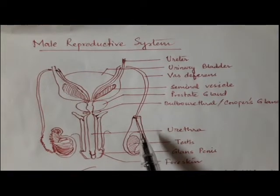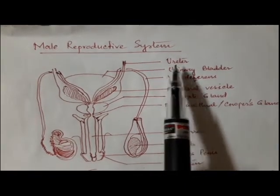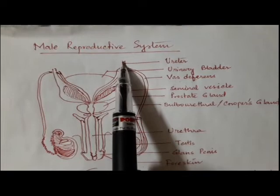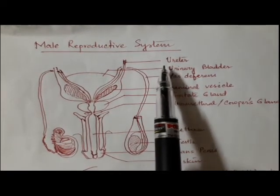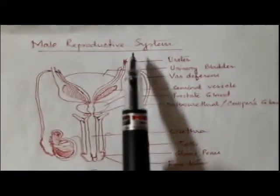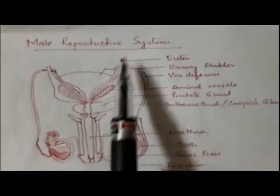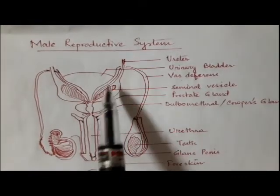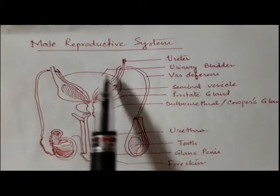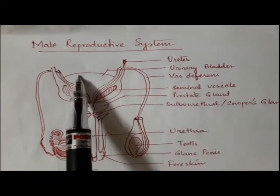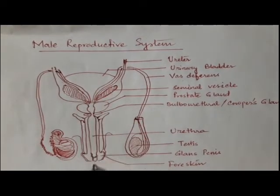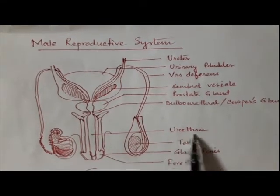Let us focus on the first portion, which is the ureter. Ureter is the tube-like structure which passes from the kidney to the urinary bladder to flow out the urine. The urinary bladder is the region which stores urine and finally it is released through the ureter.